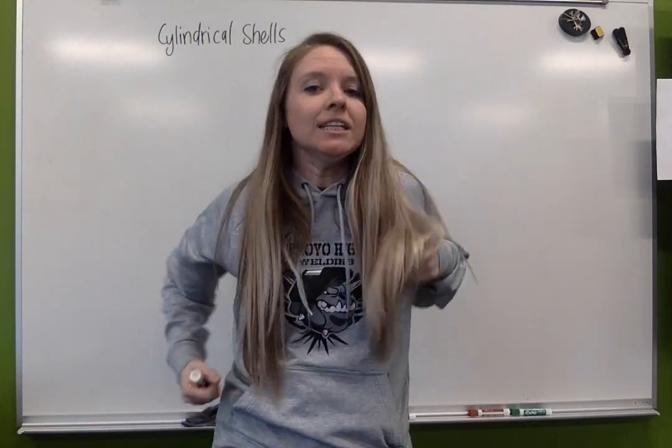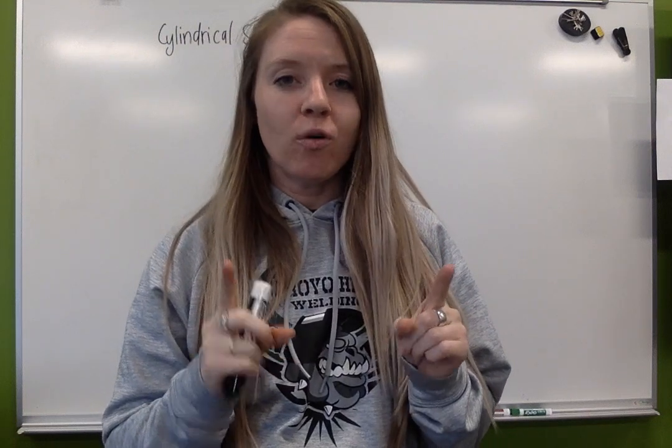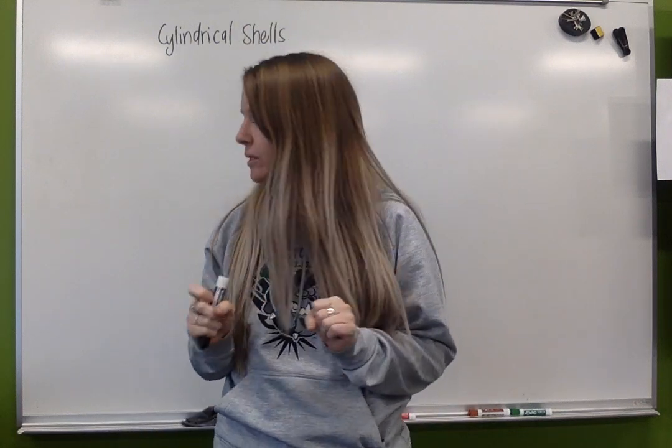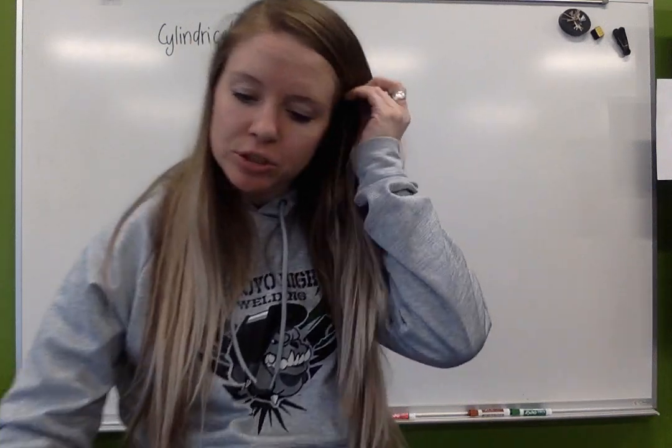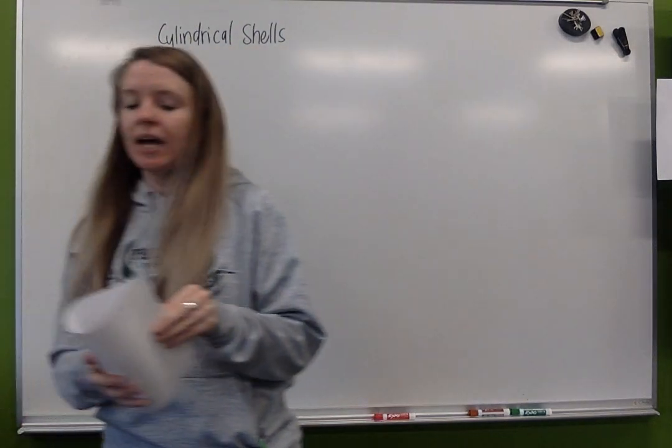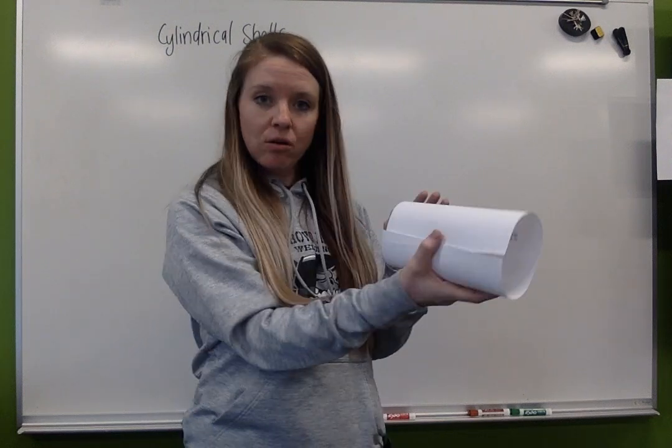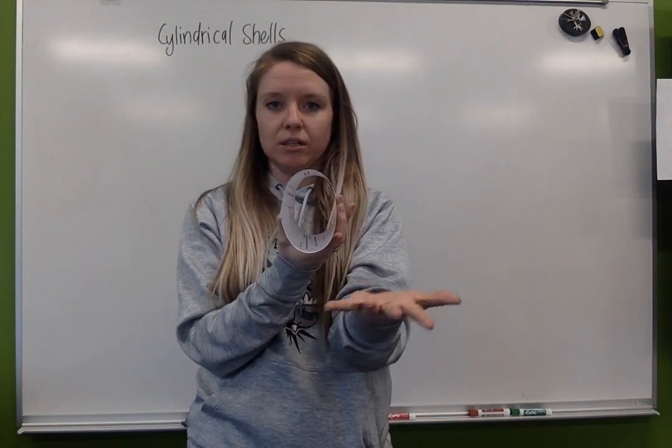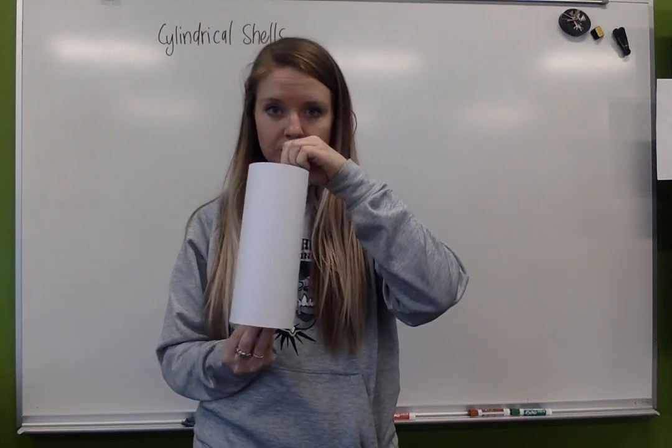Hi again! Alright, so we're back for our last volumes by rotation. Today, or this video, we're going to be doing cylindrical shells. So a cylindrical shell, my favorite or most easy example to show this to you, is a nice piece of paper. A cylindrical shell literally is just the outline of a cylinder, so a nice hollow cylinder. We're going to be finding the volume of this shape.